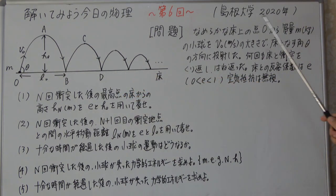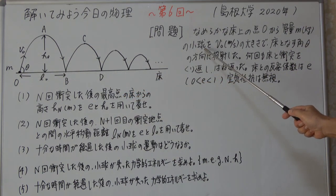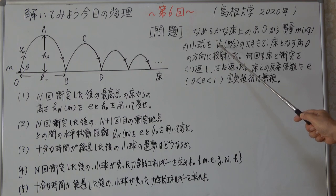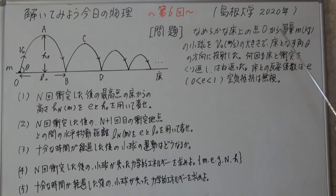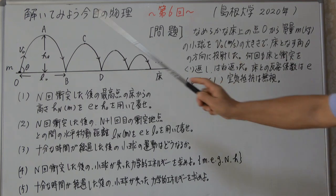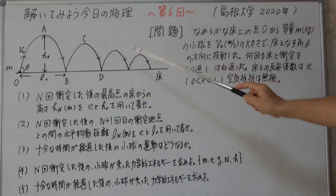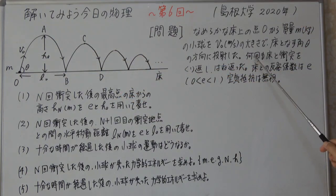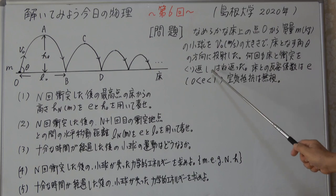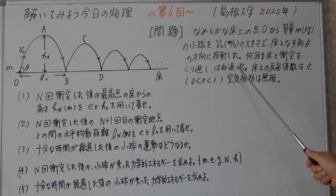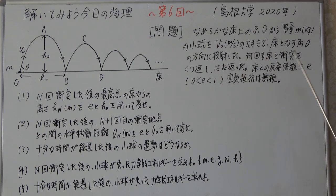今日の物理の問題を読んでみましょう。なめらかな床上の点Oから物質量mkgの小球をV0 m/sの大きさで床とθの方向に投射した。こういう風にして何回も床で繰り返し跳ね返った。床との反発係数はEとします。